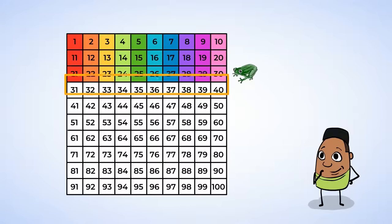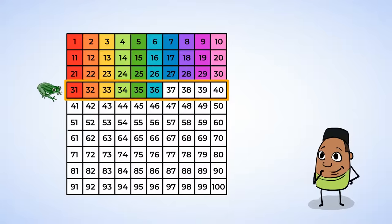One more row, and then we're going to take a quick break. Ready, Froggy? Jump! 31, 32, 33, 34, 35, 36, 37, 38, 39, 40.